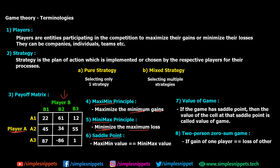When the maximin value equals the minimax value, we say there is a saddle point. The value of the game is the value of the cell at the saddle point — for example, if 34 is the saddle point then the value of the game is 34. Lastly, a two-person zero-sum game is one where the gain of one player equals the loss of the other, which happens in pure strategy.